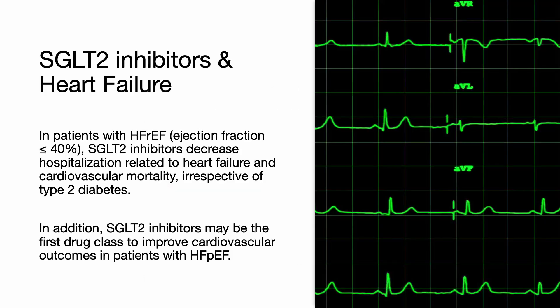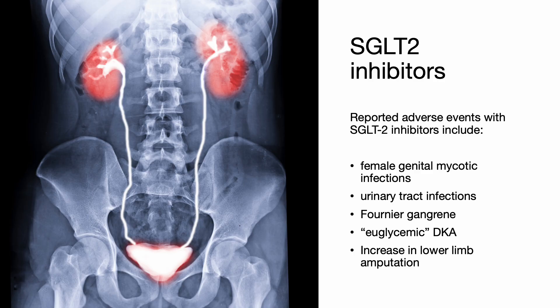In patients with heart failure with reduced ejection fraction — those with an ejection fraction less than 40% — SGLT2 inhibitors decrease hospitalization related to heart failure and cardiovascular mortality, irrespective of type 2 diabetes. In addition, SGLT2 inhibitors may be the first drug to improve cardiovascular outcomes in patients with heart failure with preserved ejection fraction. Reported adverse events — very high-yield on your exam — include female genital mycotic infections, urinary tract infections, Fournier's gangrene, euglycemic DKA, and increased risk of lower limb amputation.